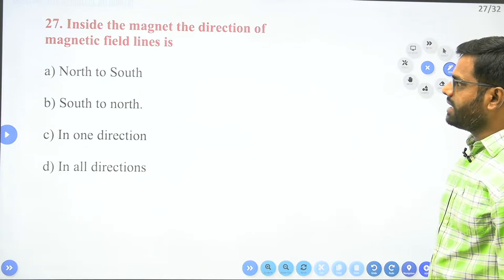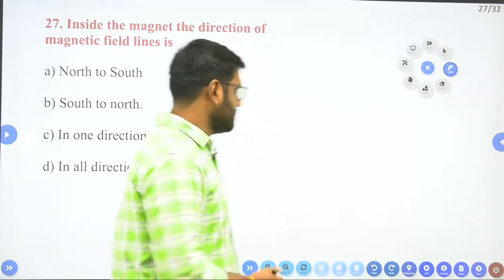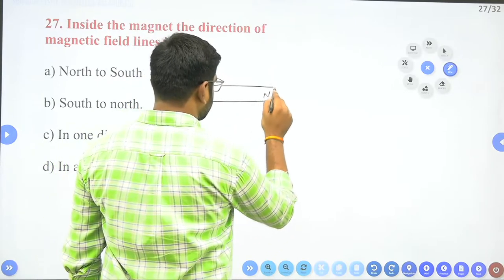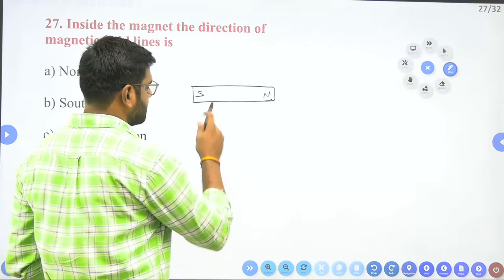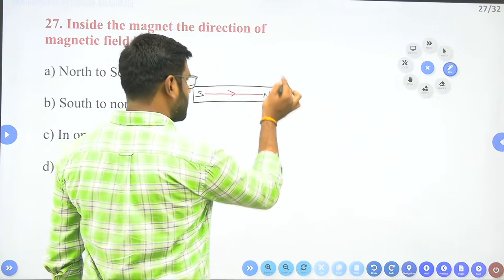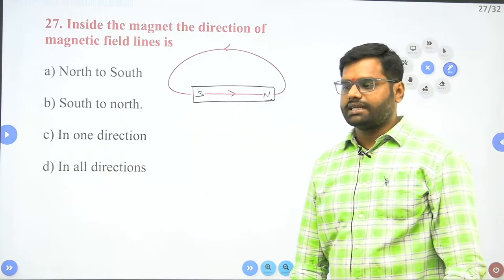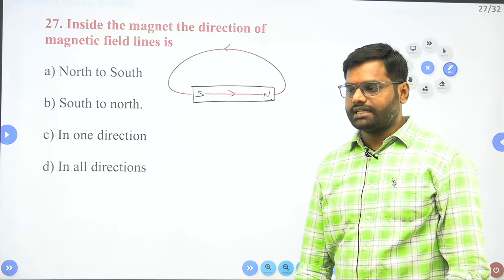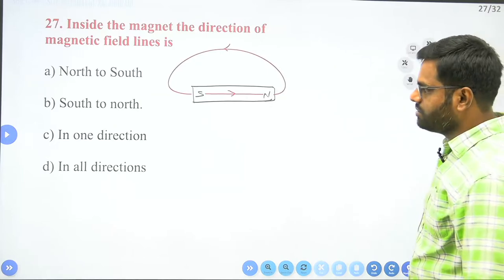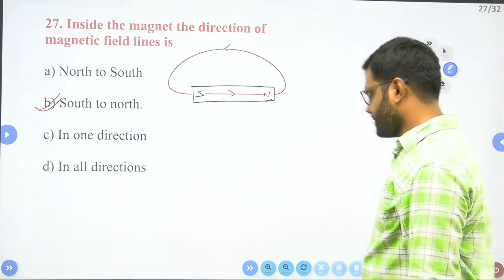The next question: inside a magnet, what is the direction of magnetic field lines? If I take a bar magnet — south pole and north pole — the direction of magnetic field inside the magnet is always from south to north. Outside the magnet it is always from north to south. So the second option, south to north, is correct.